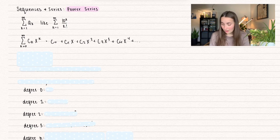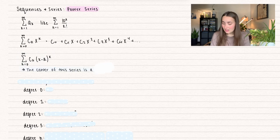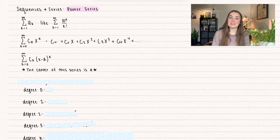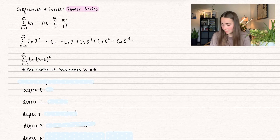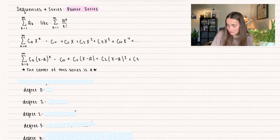Another way that power series are represented is c sub k times x minus a to the power of k. This is where the center of the series is that value of a — so that could be 2, 3, and so on. If we were to write these out, we would have c0 plus c1 times x minus a, plus c2 times x minus a squared, c3 times x minus a cubed, and then this goes on forever.